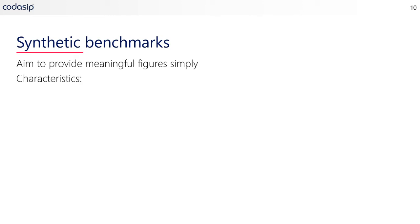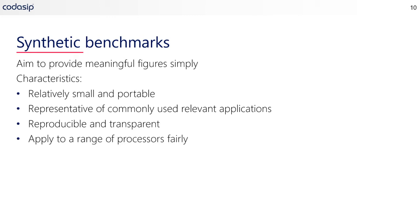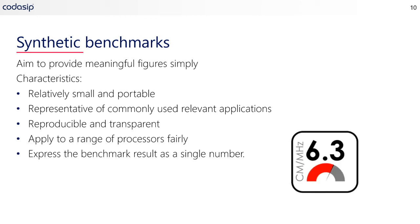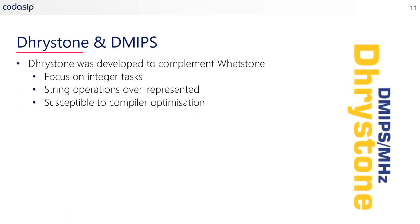A synthetic benchmark is basically a means of providing meaningful figures simply. There are a number of common characteristics to synthetic benchmarks. Firstly, they need to be relatively small and portable. They also need to represent commonly used relevant applications. They need to be reproducible and transparent and applicable to a range of processors on a fair basis. They also aim to express the benchmark result as a single number. The two most common these days are Dhrystone and CoreMark. Dhrystone was originally developed to complement Whetstone — Whetstone focused on floating point computation, whereas Dhrystone focuses on integer tasks.